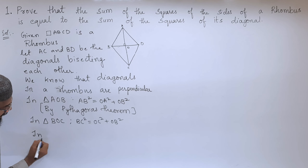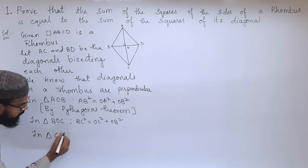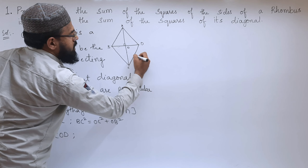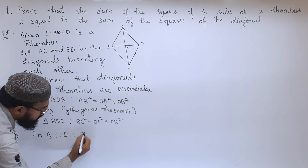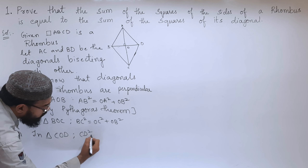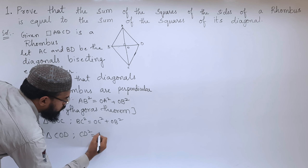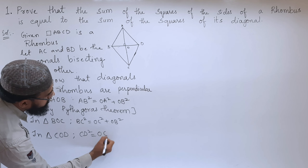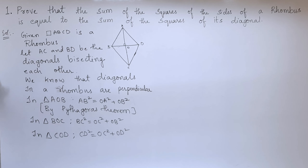Next, in triangle COD, the hypotenuse is CD. So, CD² = OC² + OD².